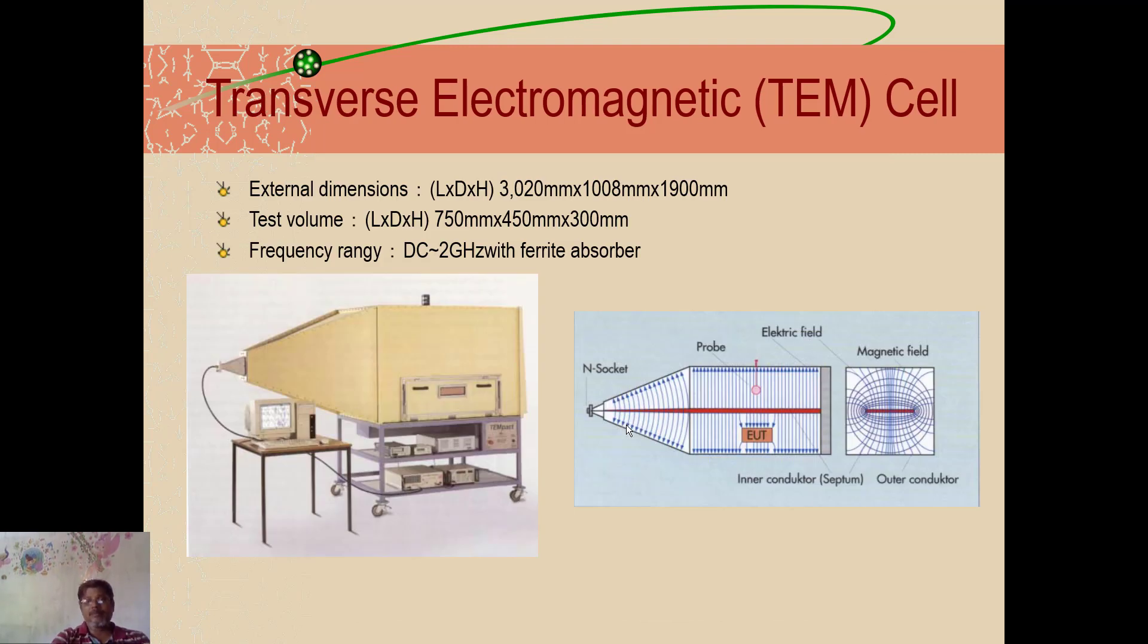Sometimes it can be like this and the other side maybe would have been closed like this. You need not have both end like what I showed other time. It can be tapered completely. One side is tapered, no need to have tapering both the side. One side is tapered, the other one is like this. So this a, b, g or we can say l, d, h are given here. This is the dimension and test volume is given. And here the frequency range up to 2 gigahertz we can go.